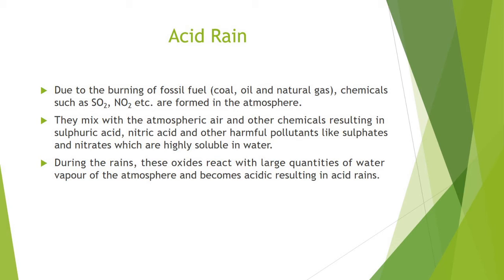During the rains, these oxides react with large quantities of water vapor in the atmosphere and become acidic, resulting in a condition called acid rain. Eventually rain hits earth and the acid pollutants change into dry particles and become acidic deposits.